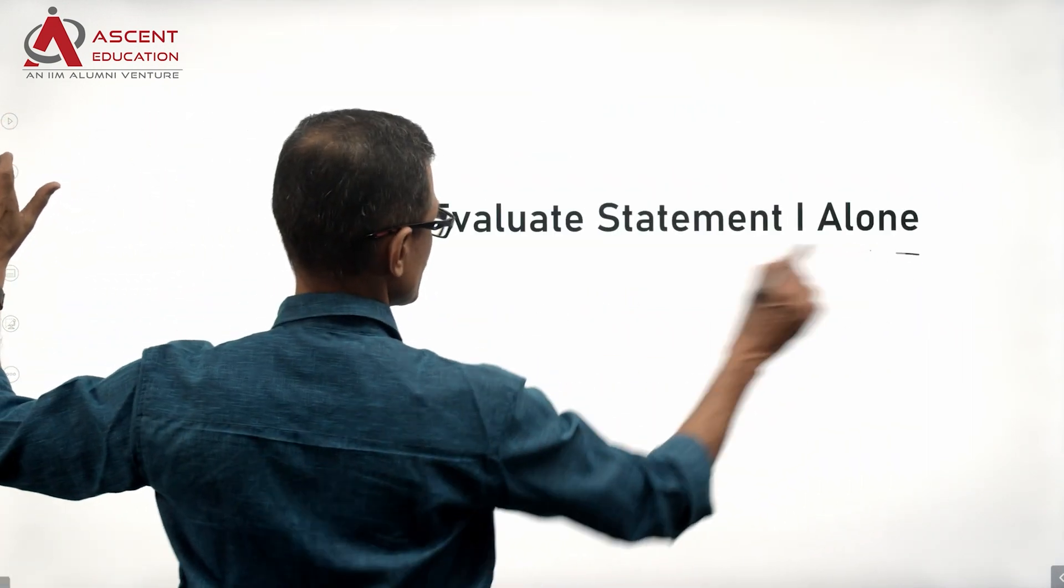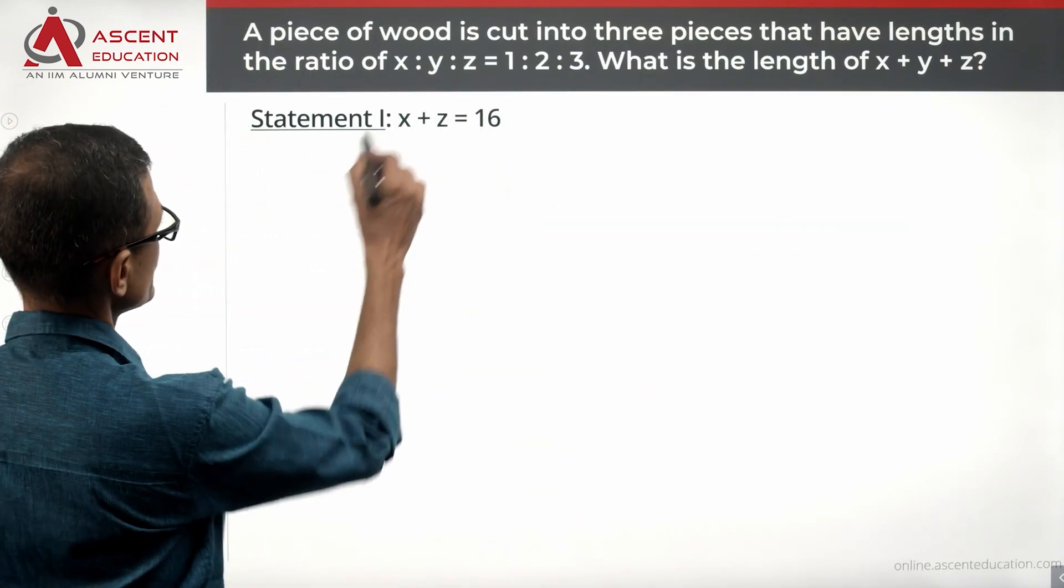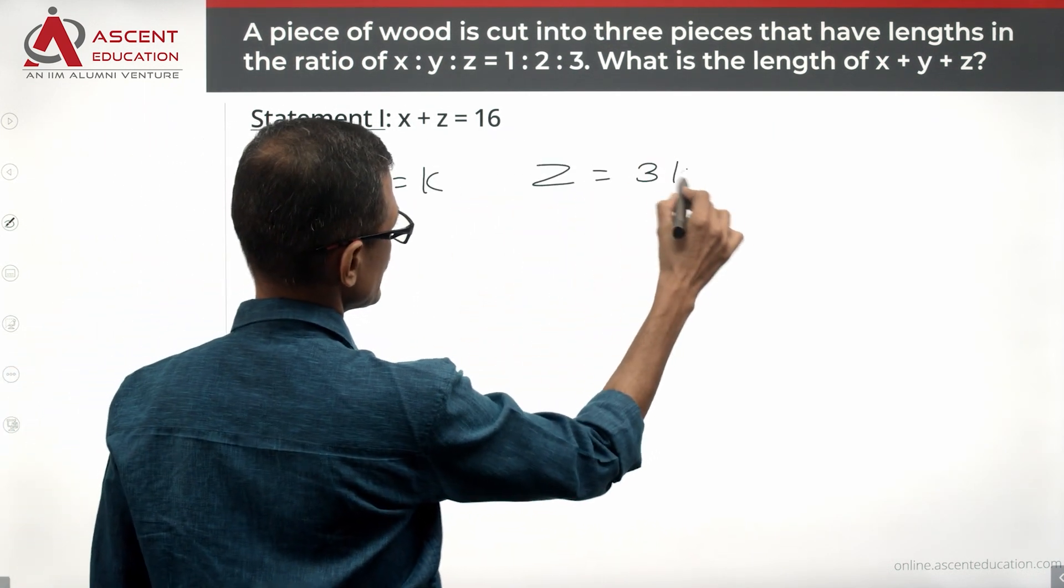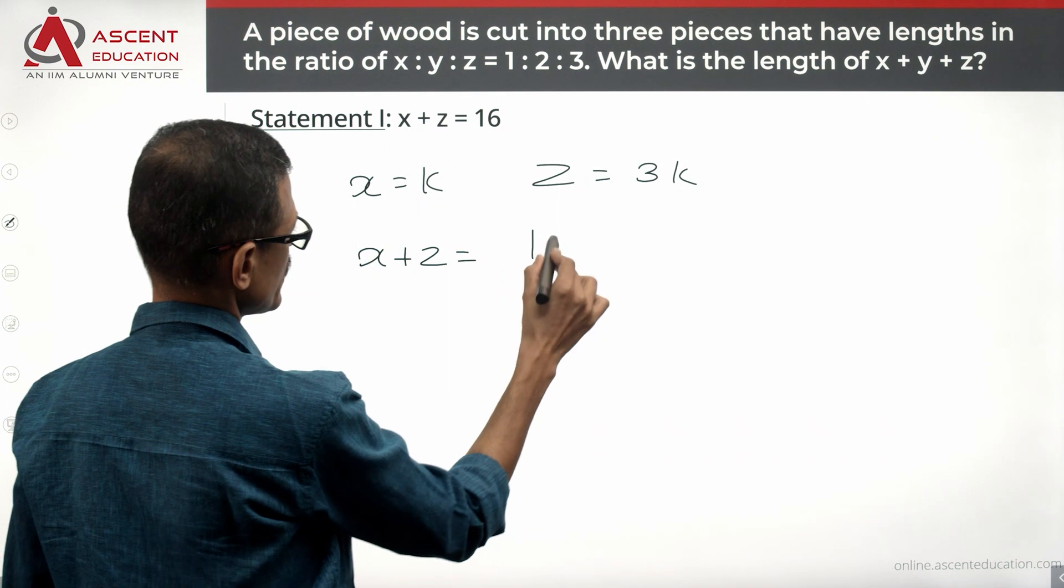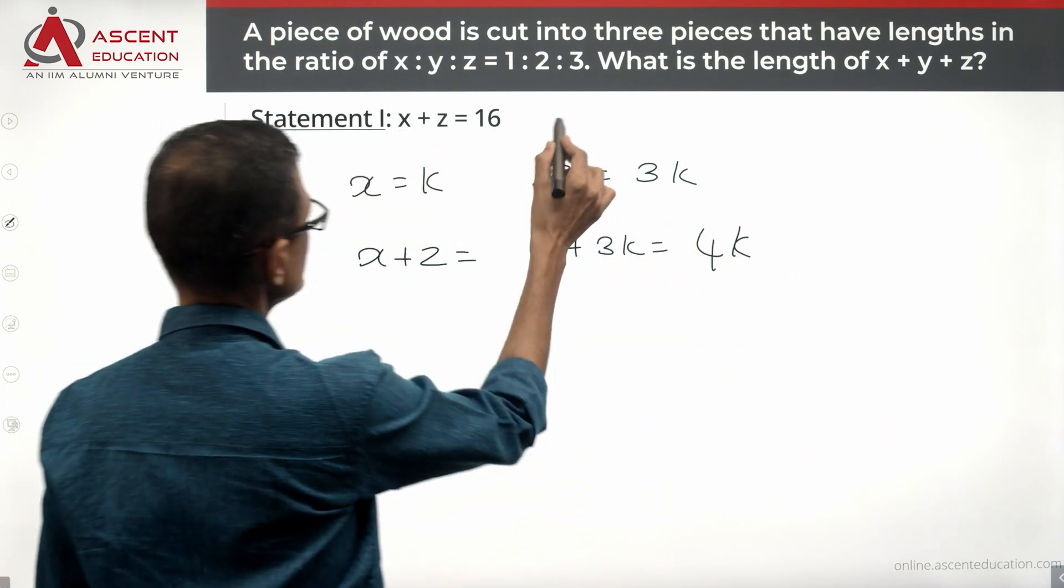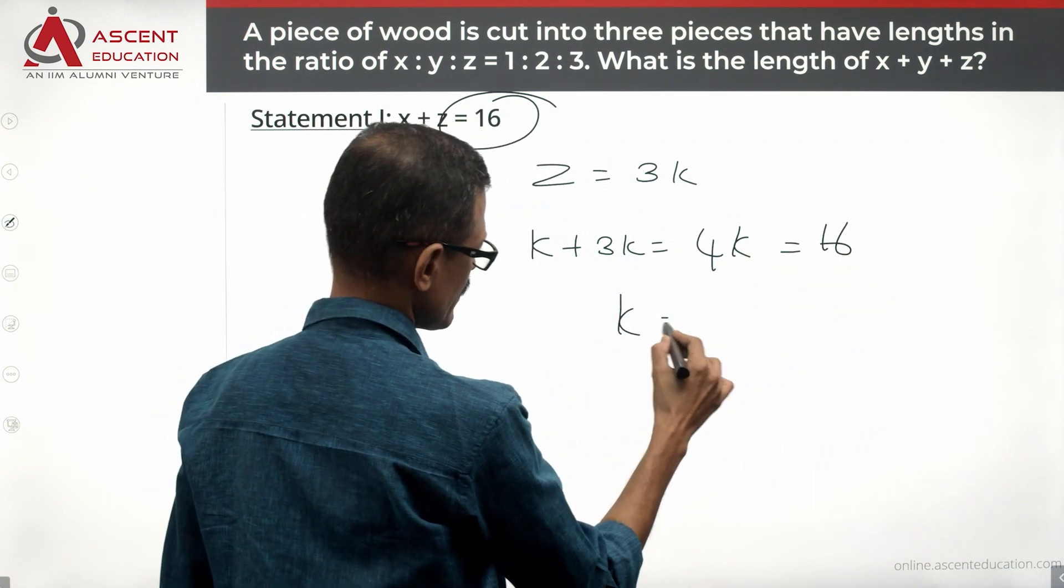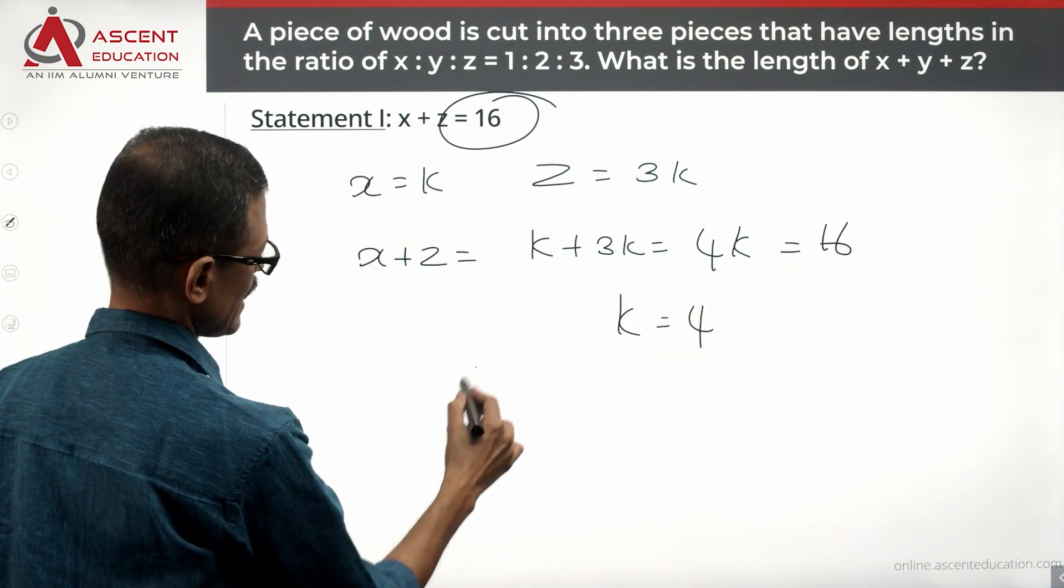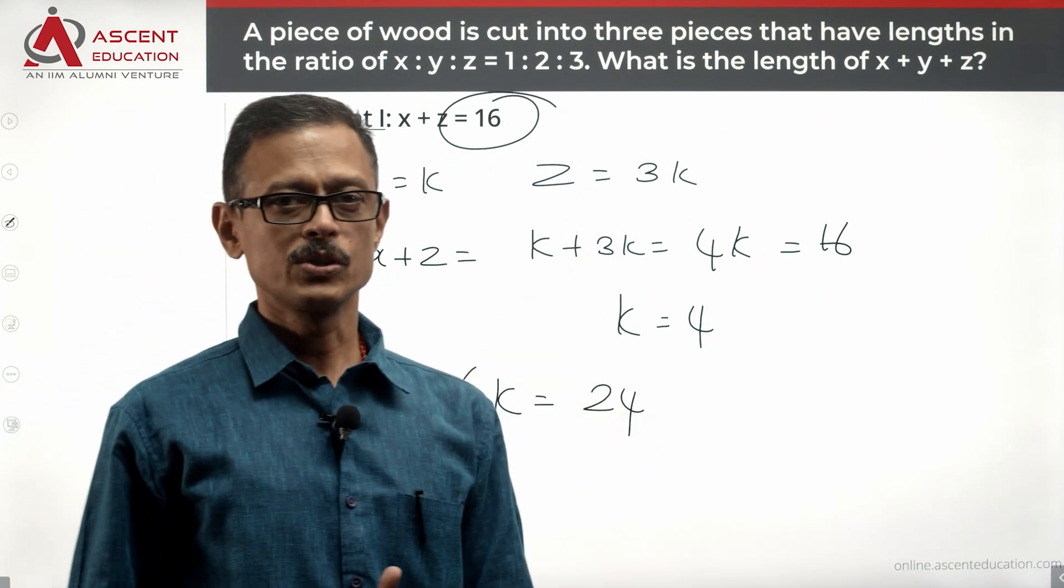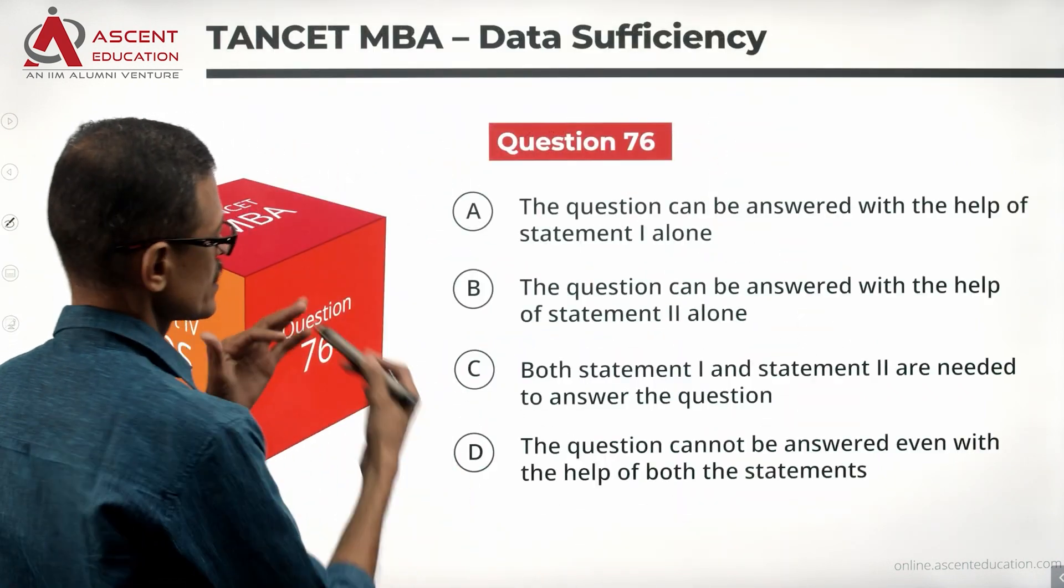Take a look at statement 1 alone and see whether we have something from it. It says X plus Z is equal to 16. So X is equal to K, Z is equal to 3K. So X plus Z will be equal to K plus 3K which is equal to 4K which according to the statement is equal to 16. So do we have a unique value for K? Yes. Which means we have a unique value for 6K which is going to be equal to 24. So statement 1 has given us a unique value. 1 alone is sufficient.